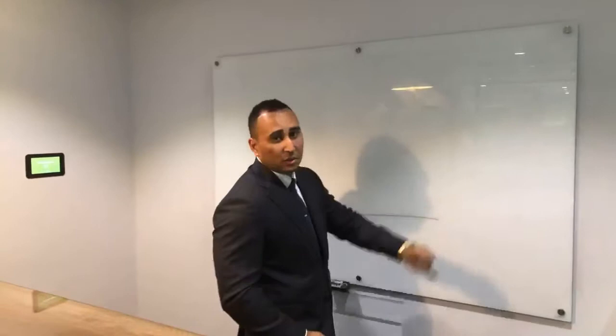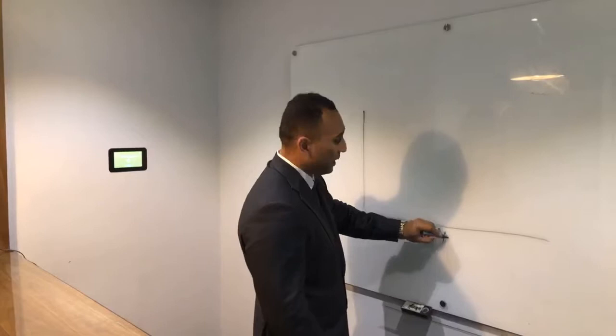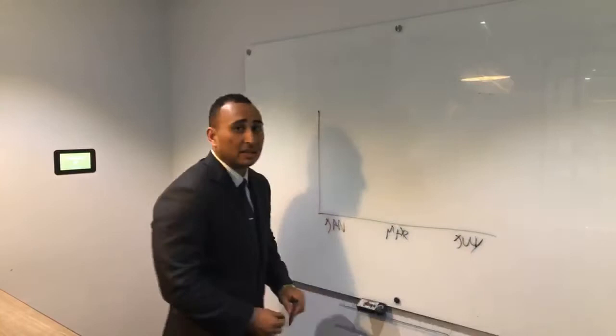So I'll just explain it to you on a simple graph here. So we have the first line of the graph which is the time. So time being the amount of time it takes to sell your property and also the dollar value, how much you're going to get for your property.